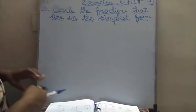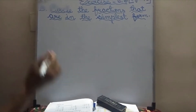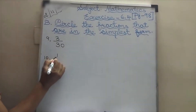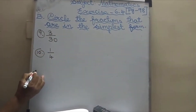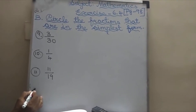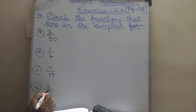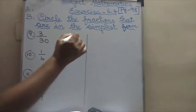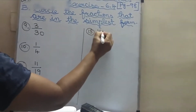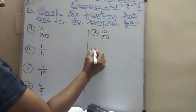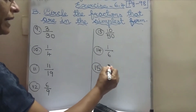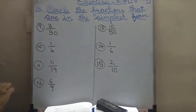We will see the 9th sum: 3 by 30. And the 10th sum: 1 by 4. And the 11th sum: 11 by 19. While you do it in the e-book, you have to mark it neatly. Don't scribble. 12th sum: 6 by 9. 13th sum: 10 by 50. And the 14th sum: 1 by 6. And the 15th sum: 2 by 10. If you understand, you can do it on your own and then check from this one.